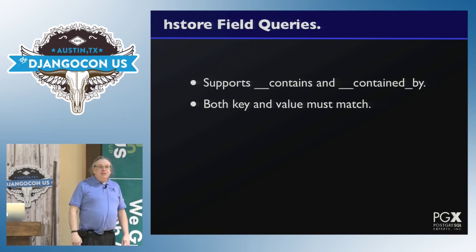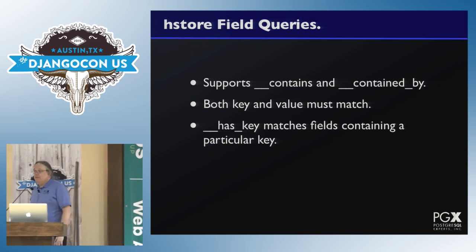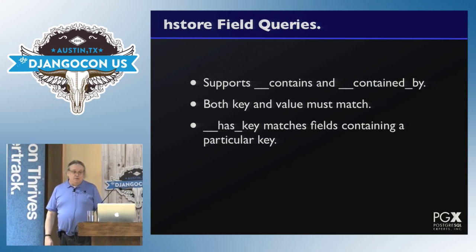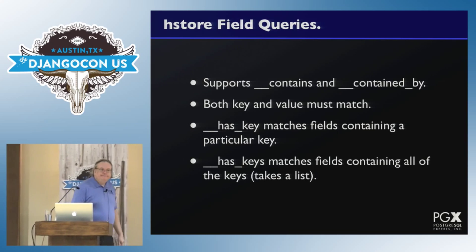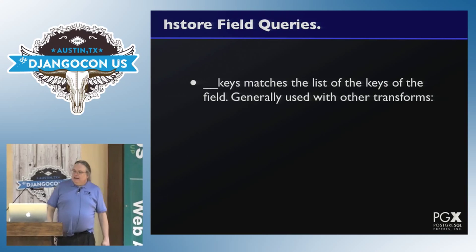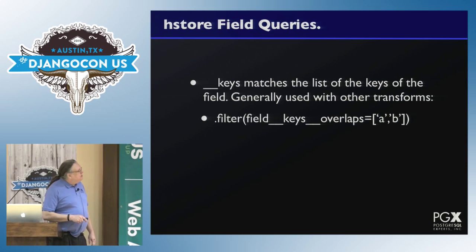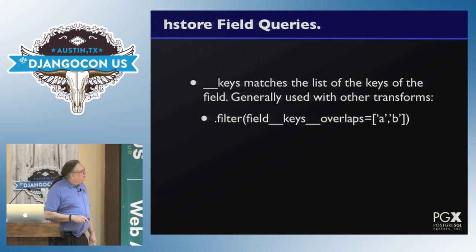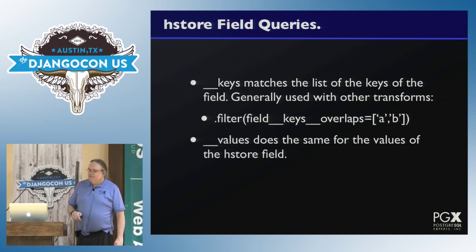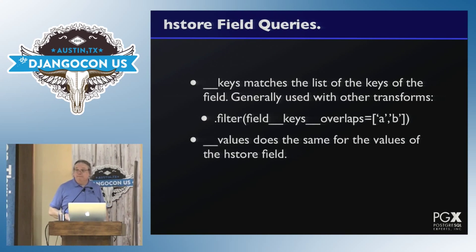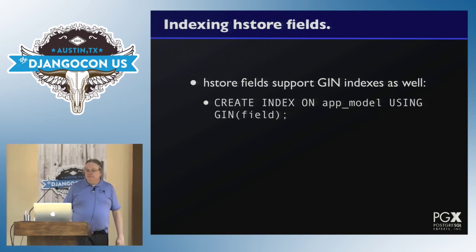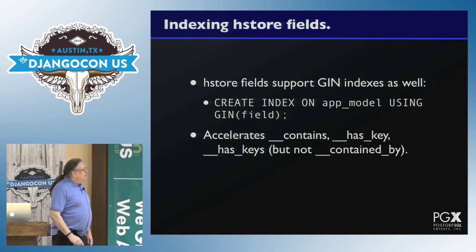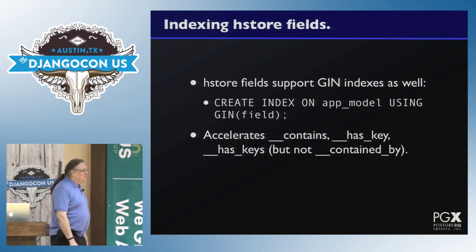Hstore supports 'contains' and 'contained_by' — both the key and the value have to match. You have 'has_key', which matches fields containing a particular key. And you have 'has_keys', which takes a list. Then there's 'keys', which returns the list of keys in the field — so you can say get me all rows whose field has keys which contain either A or B. And 'values' does the same for the values of the hstore field. Hstore fields support GIN indexes — same syntax, create index on app_model using GIN on the field. This accelerates 'contains' and 'has_keys', but not 'contained_by'.